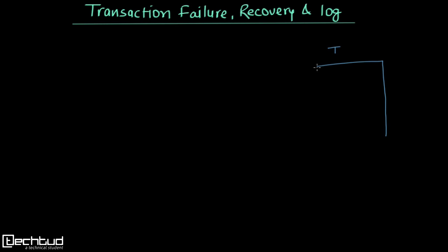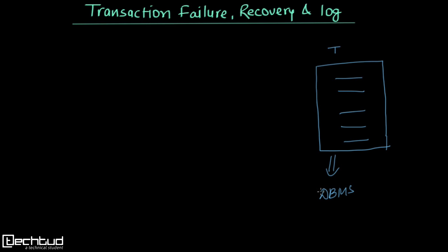When a transaction is submitted to a database system, it will have multiple operations. It is the responsibility of the database management system to execute all of these operations. From the concept of atomicity, a transaction has to execute all its operations or none of the operations — it will execute or it will not be executed.